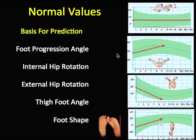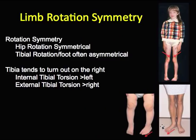We know this because of the normal values based on natural history, studied by examining about a thousand extremities in normal children and a few adults. We measured various angles — shown here with green as the normal range and red as the average — looking at the foot progression angle, hip rotation, and the thigh foot angle on the tibia.